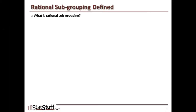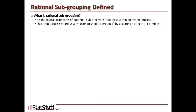Rational subgrouping refers to the logical distinction of potential subprocesses that could exist within an overall process. Each of these different subprocesses are usually distinguished or grouped by some particular factor or category.